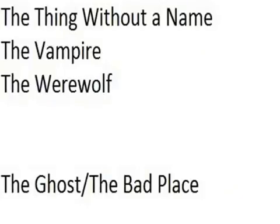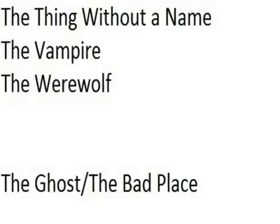Tales of the Tarot involves certain archetypes, tropes, or conventions which the stories will conform to an extent. There are going to be similarities with all Tales of the Tarot, whichever tarot card we're in. The thing without a name was last time; this time it's the vampire. The cards are: the thing without a name is the first card, the vampire is the second, the werewolf is the third, and the fourth — or fourth-and-a-half card — is the ghost or the bad place. It's a vaporous idea, and we'll discuss that later.